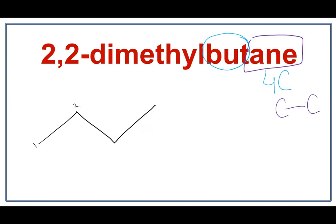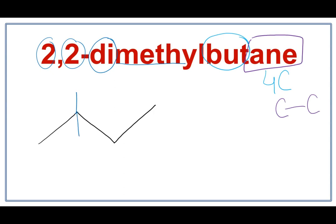Let's number these: 1, 2, 3, 4. We see 'methyl' and 'di', which tells us that there are two methyl attachments — both on carbon number 2. Let's get rid of the numbers and attach the methyls. This is the first methyl and this is the second methyl. This is the structure for 2,2-dimethylbutane.